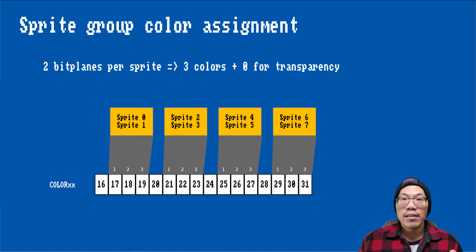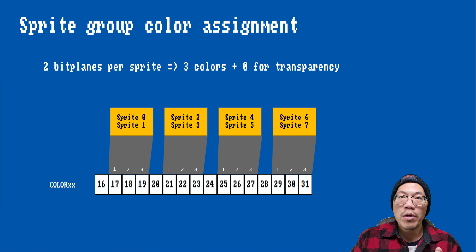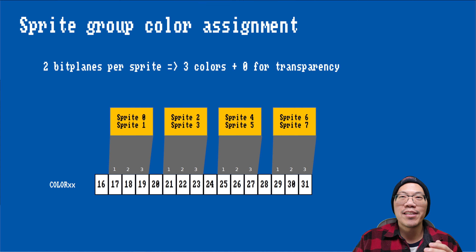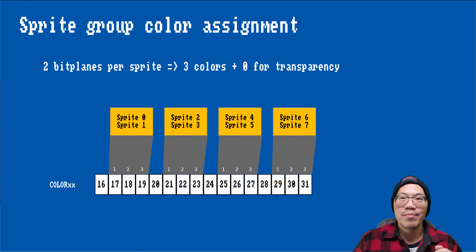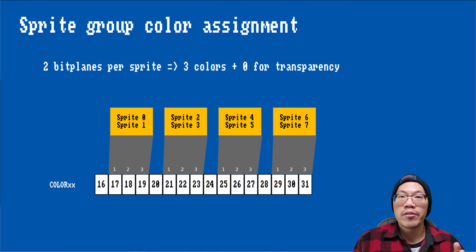So we know that the image data of each sprite consists of two bit planes. But which colors are actually used? It turns out that on the Amiga, the sprite DMA channels are organized such that 0 and 1, 2 and 3, 4 and 5, and 6 and 7 form a group. Each group uses three colors within the color registers 16 to 31. The bit combinations that form the values 1, 2, and 3 result in their respective colors, while the value 0 indicates that the pixel will be transparent.